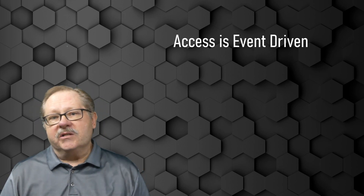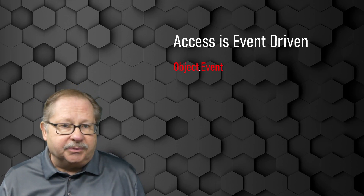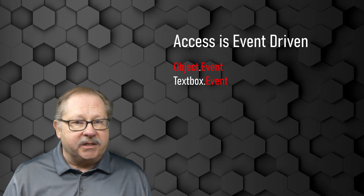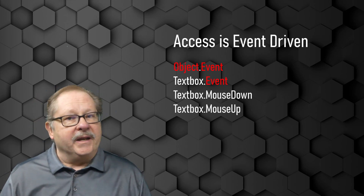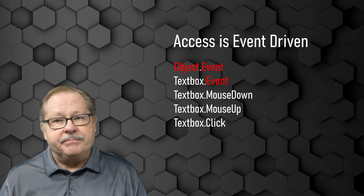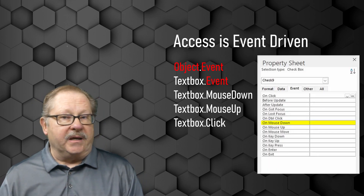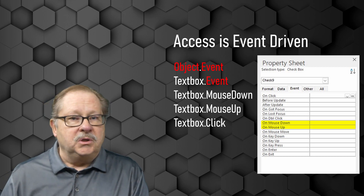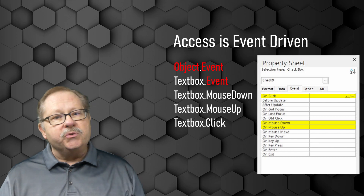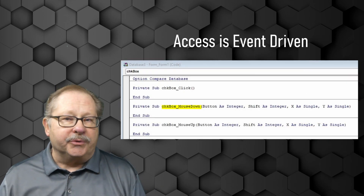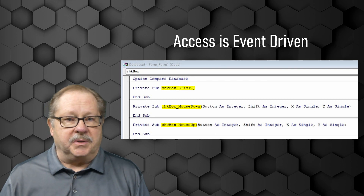Access applications are event-driven, and access objects respond to many types of events. Access events are hooked into specific object properties. For example, checking or unchecking a checkbox triggers a mouse down, a mouse up, and a click event. These events are hooked into the checkbox through the on-mouse down, on-mouse up, and on-click properties, respectively. You use VBA to compose event procedures that run whenever the user clicks the checkbox.